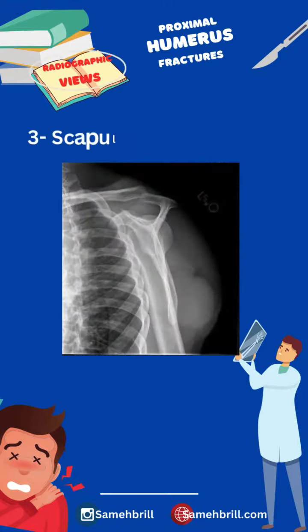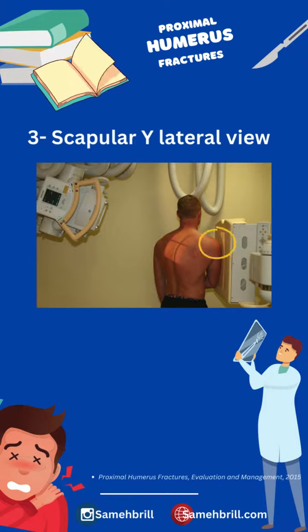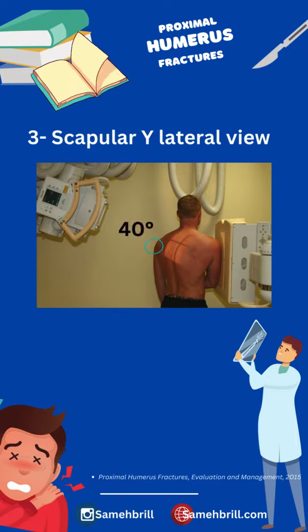Finally, the scapular Y view. It's obtained by placing the anterior aspect of the affected side against the x-ray cassette, with the other side rotated out 40 degrees.